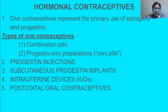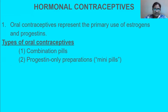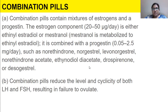In today's lecture on hormonal contraceptives, we will talk about oral contraceptives. In oral contraceptives there are two kinds: combination pills and progestin-only preparations. Then we have progestin injections, subcutaneous progestin implants, intrauterine devices, and post-coital oral contraceptives. We'll discuss all of these, starting with combination pills and progestin-only preparations, also called mini pills.